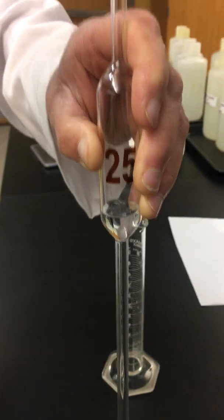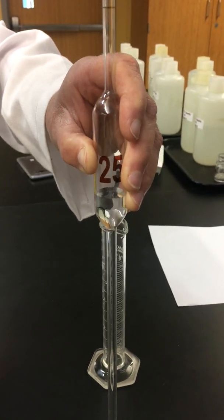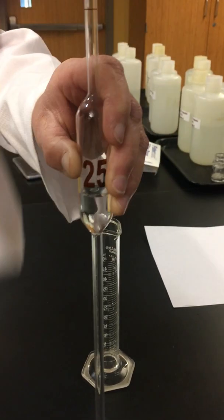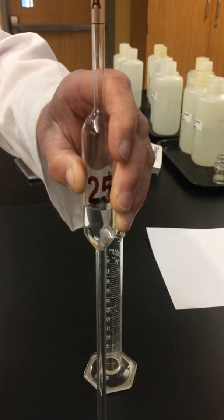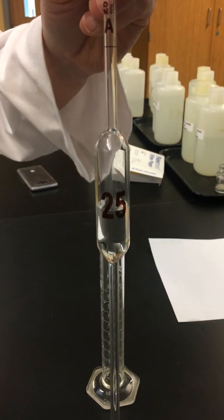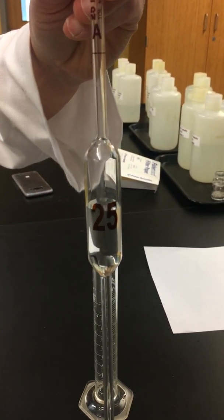We want to always make sure we're avoiding pulling liquid up into the pipette aid because that ruins it. So now we just keep slowly turning the dial, allowing the liquid to come up as we turn it.